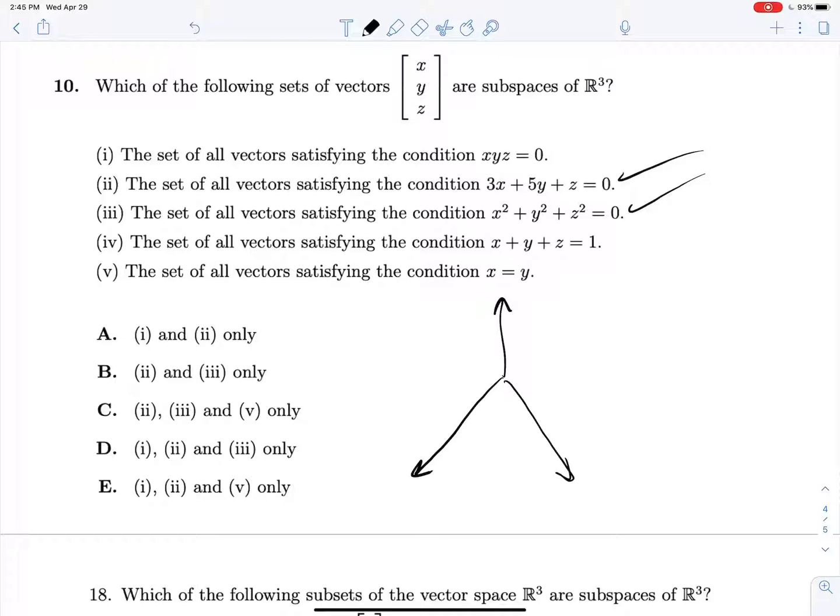So it says x times y times z is equal to 0 is the condition for this. Well, for that, either x, y, or z, or multiple have to be equal to 0. So we will get the xy plane, the xz plane, the yz plane, and then the x-axis, y-axis, z-axis, and the origin.